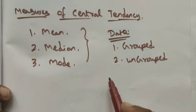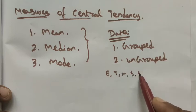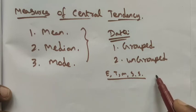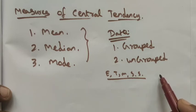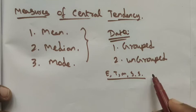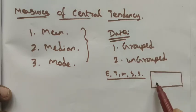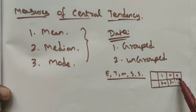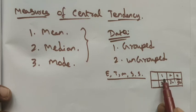For example, English, Tamil, Maths, Science, and Social — all these marks are called ungrouped data. Grouped data means all the students in a classroom, and each student's marks in science and social science are tabled in a table form. For example, the first student scored 20 marks, the second student scored 30 marks, four students scored 50 marks — in a group form.